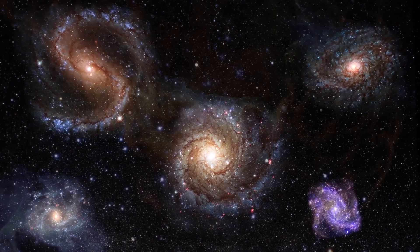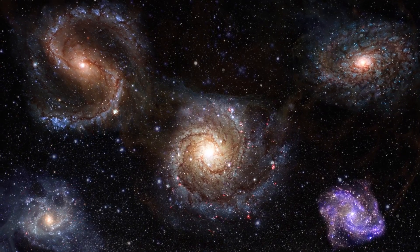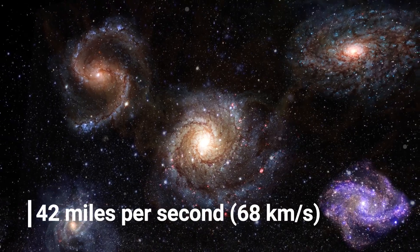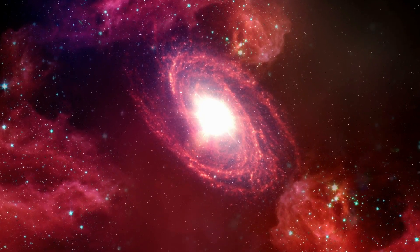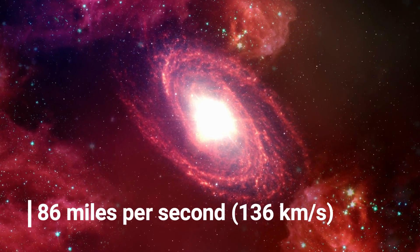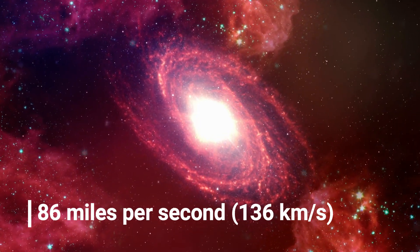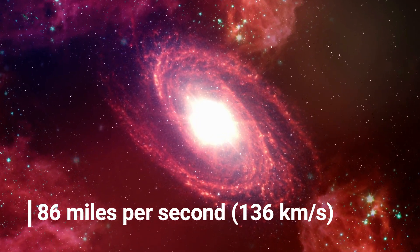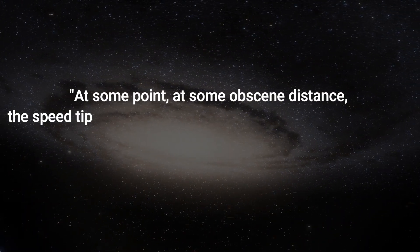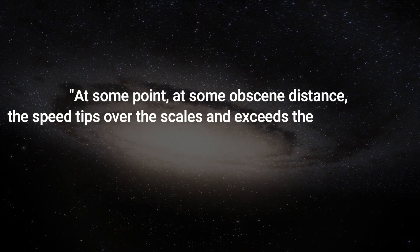a galaxy 1 megaparsec away appears to be traveling away from the Milky Way at a speed of 42 miles per second or 68 kilometers per second while a galaxy 2 megaparsec away recedes at nearly 86 miles per second or 136 kilometers per second and so on. At some point, at some obscene distance, the speed tips over the scales and exceeds the speed of light.